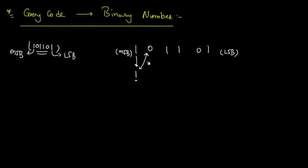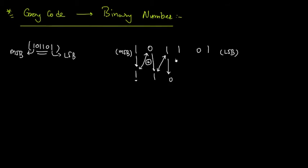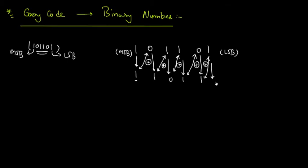If we use XOR between these two bits, we get the next binary bit. Both inputs are different in XOR, so we get output 1. Now use XOR between these two bits — both inputs are same, so we get 0. Use XOR again between the next two bits — both inputs are different, so we get 1. Use XOR between the next two bits — both inputs are different, so we get 1. For the final pair, both inputs are same, so we get 0.